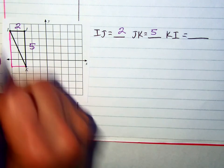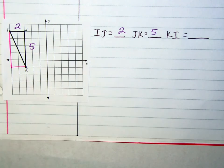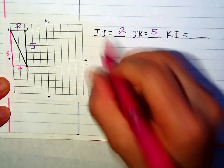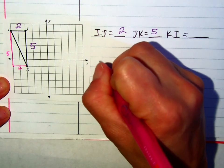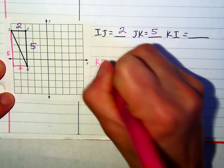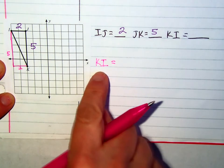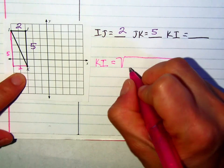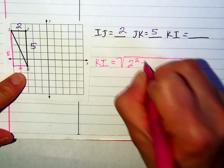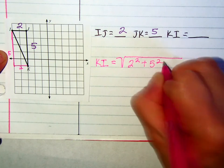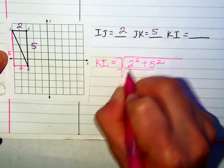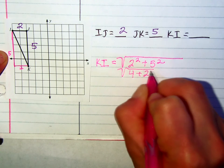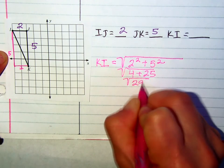So for this particular triangle, I have a base of two and a height of five. So I'm going to use my distance formula to find what KI is. I'm going to take the square root of the base squared, so two squared, plus the height squared, five squared. When I do that, two times itself is four. Five times itself is 25. And when I add these together, I get 29.